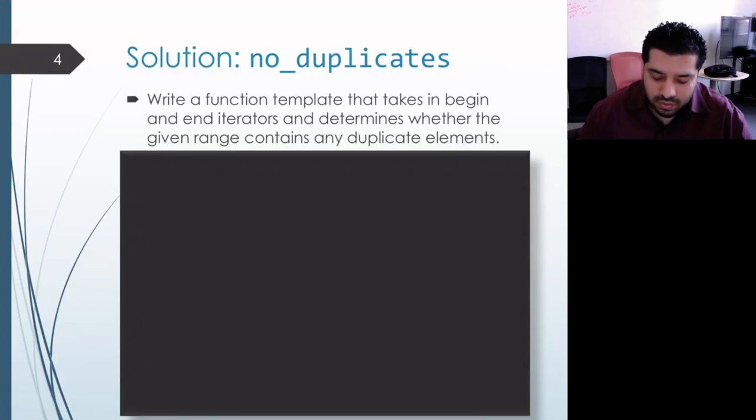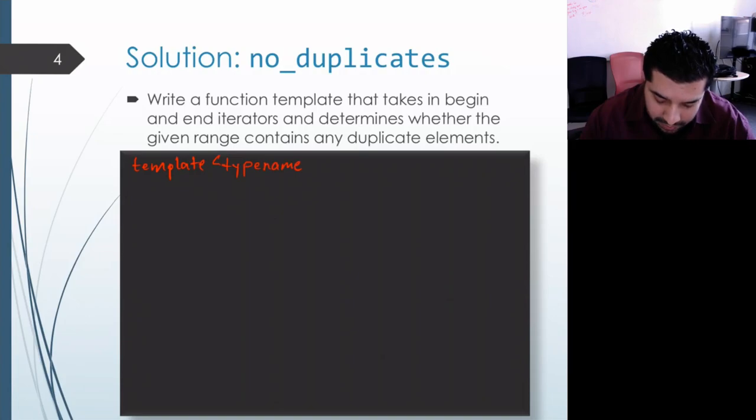Okay so we're writing a function template here and it's going to be parameterized over the iterator type. So let's go ahead and write the template header and I'm actually going to name the type parameter just iter. Then like the standalone no duplicates version, we're going to be returning a boolean which is going to be true if there aren't any duplicates and false if we do find a duplicate.